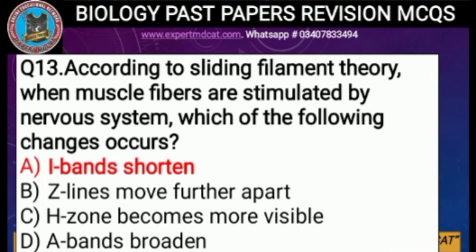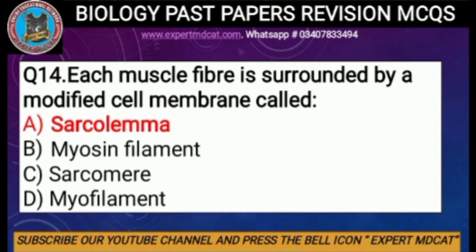Question number thirteen: according to sliding filament theory, when muscle fibers are stimulated by the nervous system, which change occurs? Options are: I bands shorten, Z lines move further apart, H zone becomes more visible, or A bands broaden. The correct option is A, I bands shorten, because during contraction I bands shorten, Z lines get closer, and the A band remains the same.